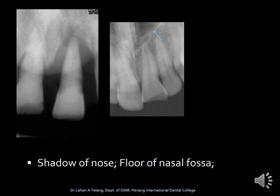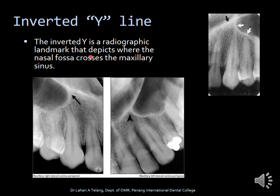This radiograph shows the shadow of the nose and also the floor of the nasal cavity. Interestingly, you can also see the inverted Y line — a radiographic landmark that depicts where the nasal fossa crosses the maxillary sinus. The nasal fossa and the floor of the maxillary sinus cross here, giving the appearance of an inverted Y line.